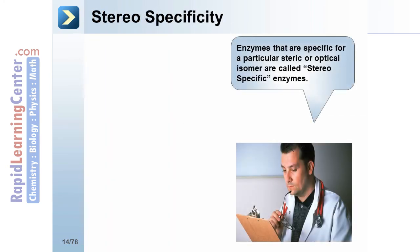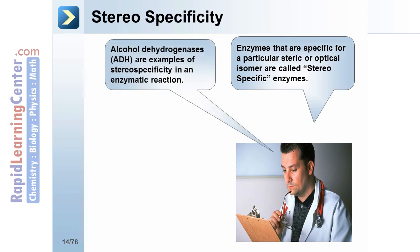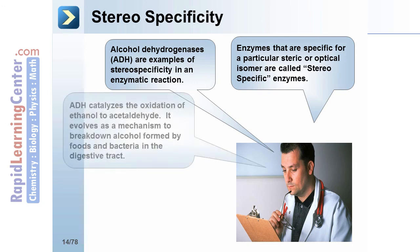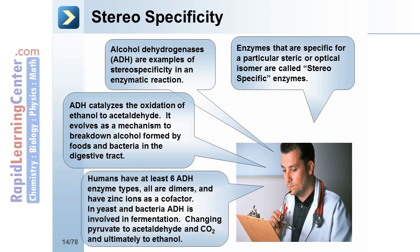Stereo specificity: Enzymes that are specific for a particular steric or optical isomer are called stereospecific enzymes. Alcohol dehydrogenases — ADH — are examples of stereospecificity in an enzymatic reaction. ADH catalyzes the oxidation of ethanol to acetaldehyde, evolved as a mechanism to break down alcohol formed by foods and bacteria in the digestive tract. Humans have at least six ADH enzyme types — all are dimers and have zinc ions as a cofactor. In yeast and bacteria, ADH is involved in fermentation, changing pyruvate to acetaldehyde and CO2, and ultimately to ethanol.